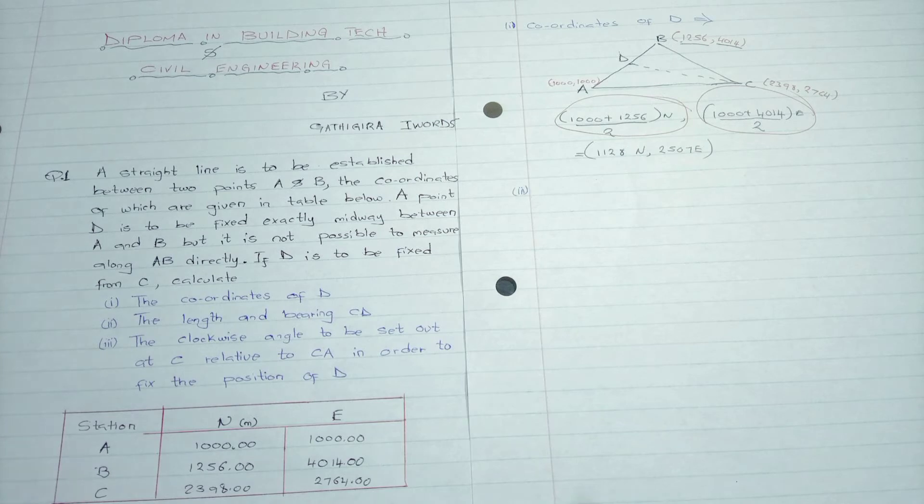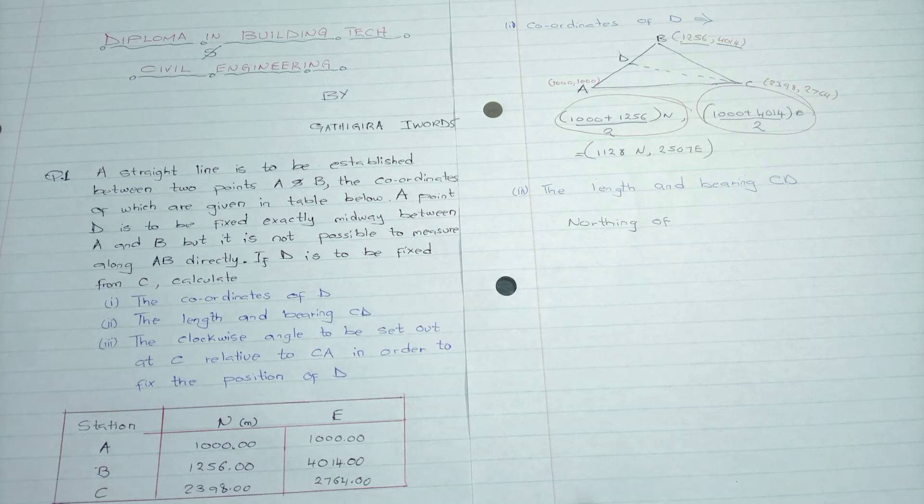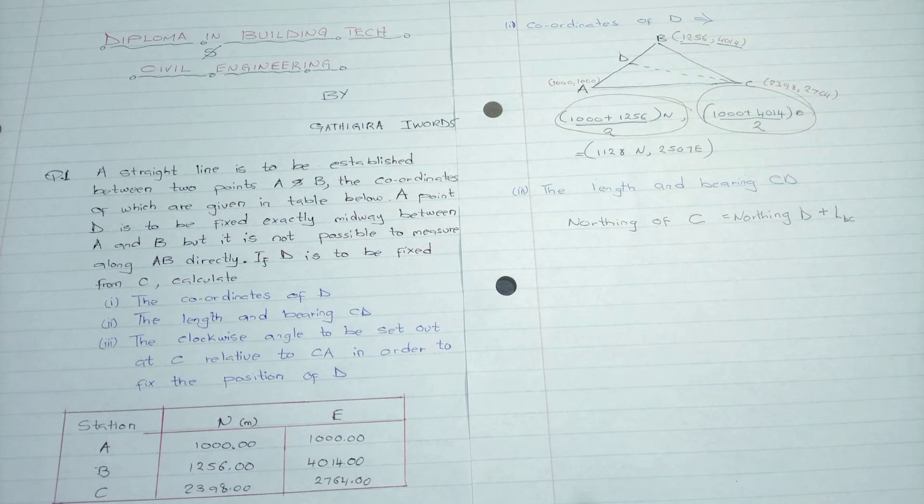Having completed that, we go to our second question: find the length and bearing of CD. We come where C is and compare it to D, which we already calculated. The northing of C is equivalent to the northing of D plus the length of CD cos theta. That's the mathematical equation.